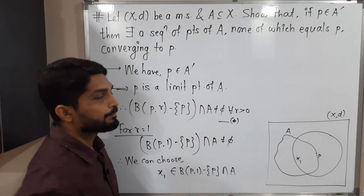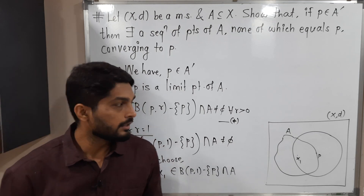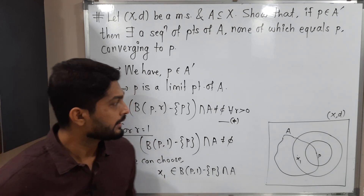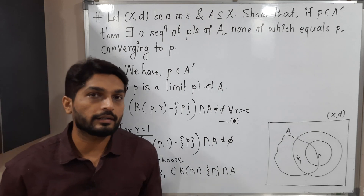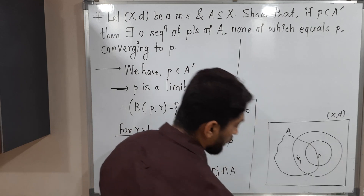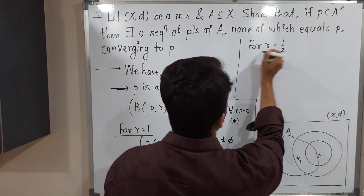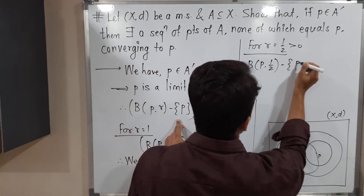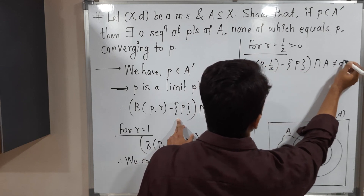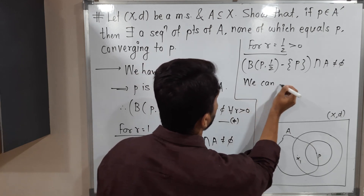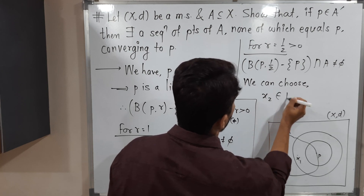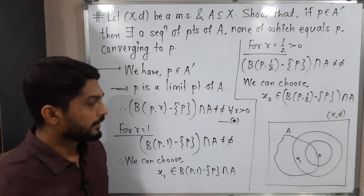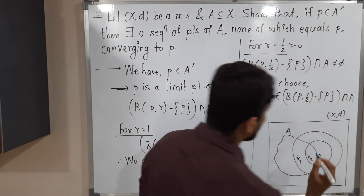Now I will repeat the same process for R equal to 1/2 — I am reducing the radius. That means we get a ball with center P and radius 1/2, a smaller ball. But again the intersection will be non-empty, since this is true for every R greater than 0. So for R equal to 1/2, B(P, 1/2) minus singleton {P}, intersection A, is not equal to empty set. Again the intersection is non-empty, so we can choose one more point X2 belonging to B(P, 1/2) minus singleton {P}, intersection A.